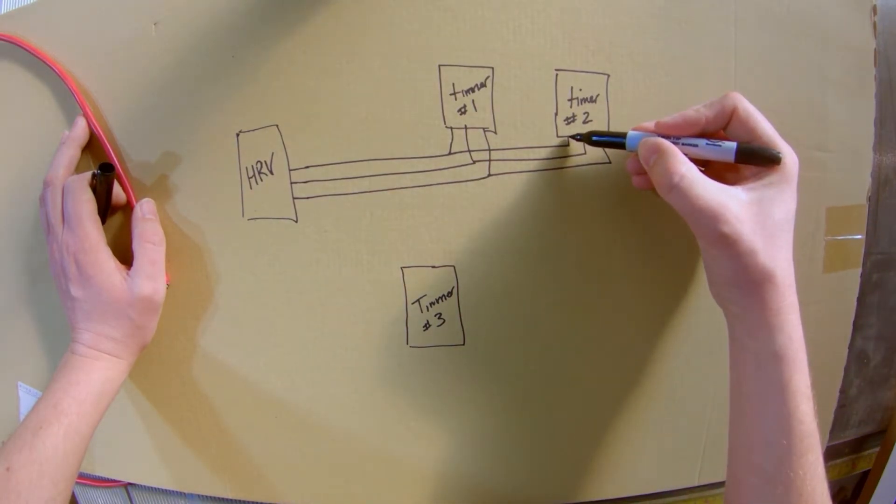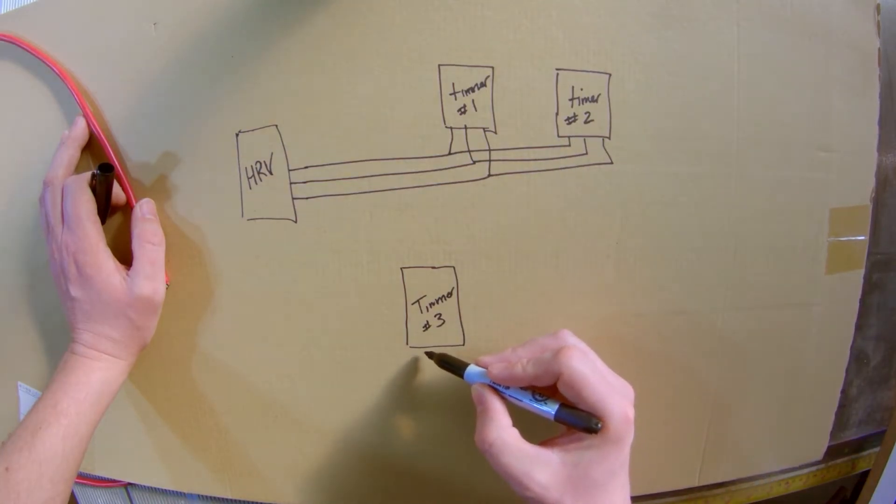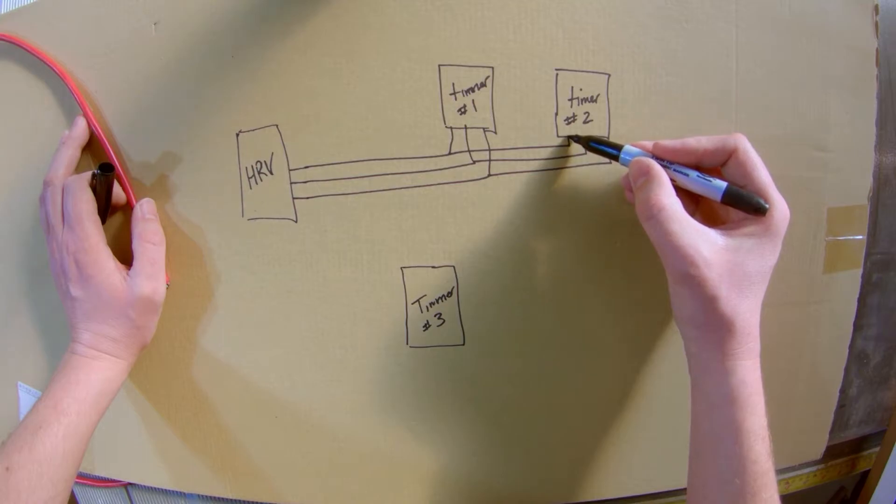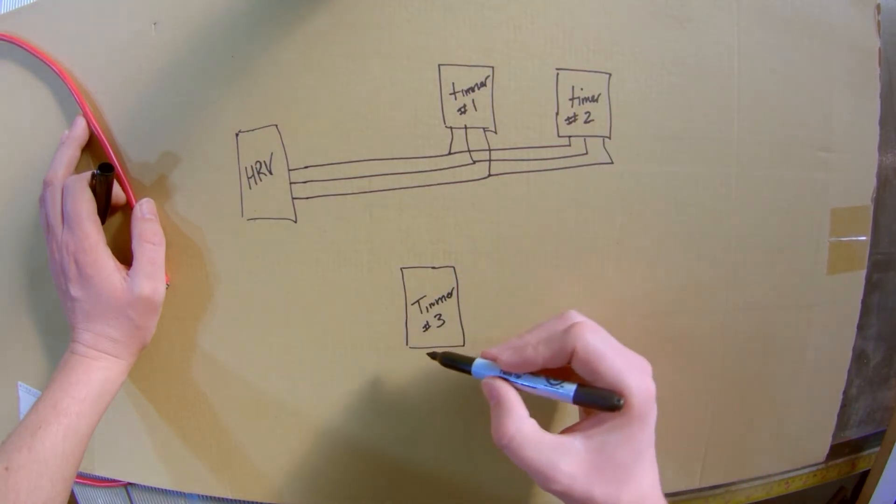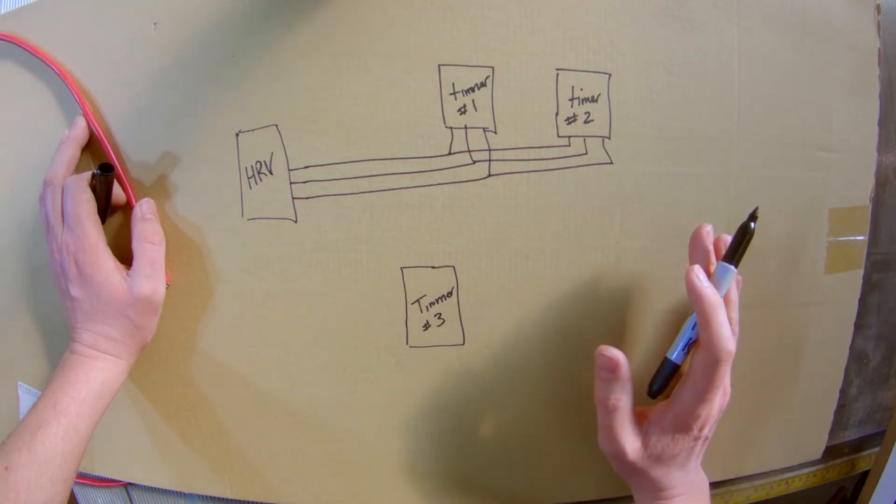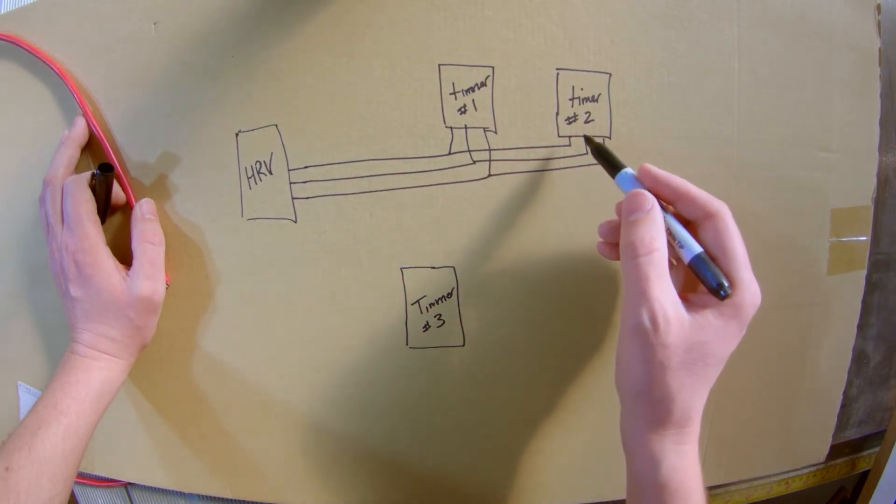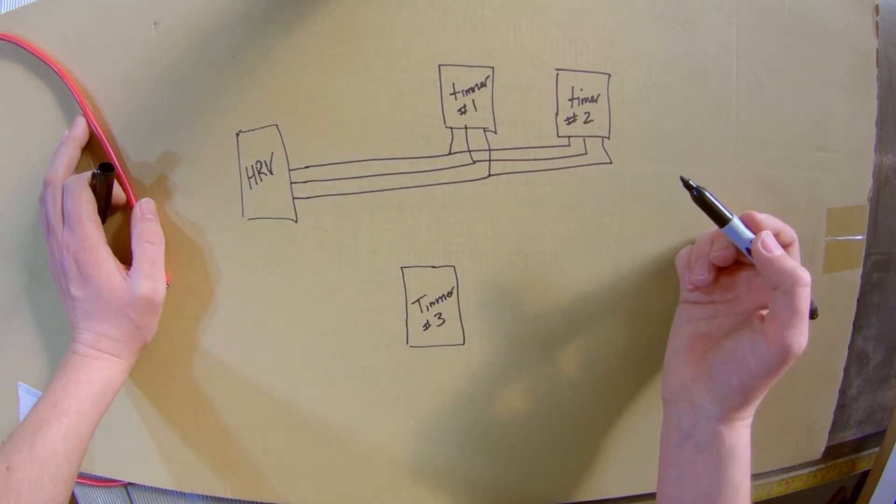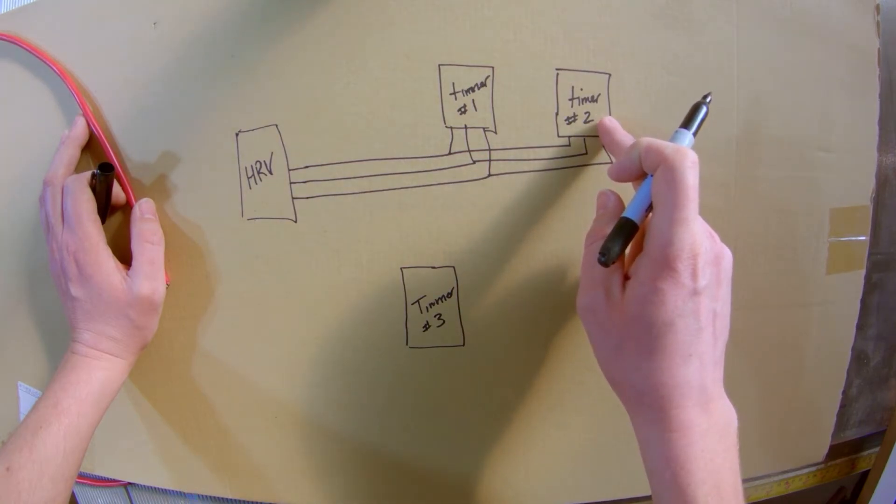You can run new cable from your last timer into here. And so green would go to the first one, and then that would be how the cycle would end just like it does for your timer two. Usually this is harder because usually this will be up on your second floor or something like that.